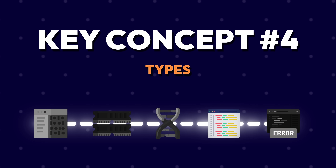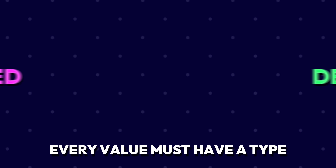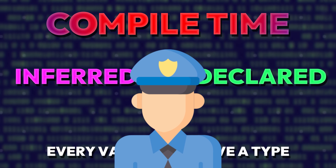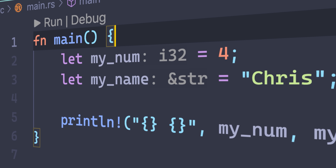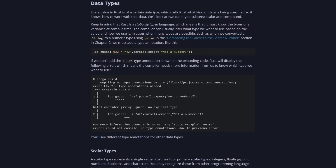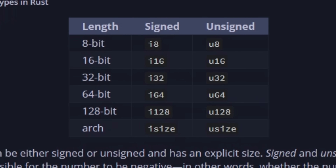Let's jump back into the overview with the fourth key concept: types. If you're familiar with TypeScript, the syntax will look very similar. However, Rust gives you way more options and actually enforces the types — it's a static and strongly typed language. Every value must have a type, either inferred or declared, and that type is enforced at compile time. You can't coerce numbers into strings without explicitly marking that change. Like TypeScript, Rust can often infer types — for instance, it can infer that my num is an i32 and my name is a string slice. Instead of the single number type in TypeScript, Rust gives you size-specific options for integers and floating points — more than 20 different number types.